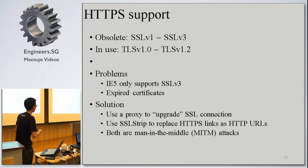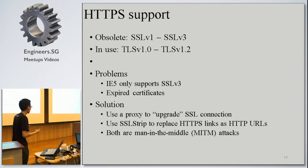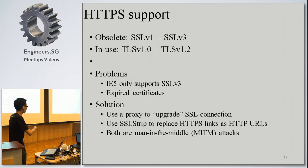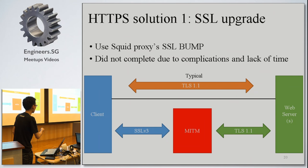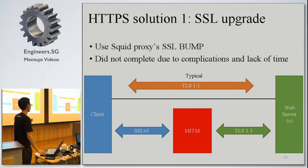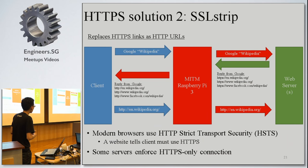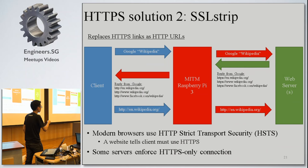There are two solutions. The first is to use a proxy to upgrade the SSL connection. The second is to use SSL Strip to remove HTTPS links and map them as HTTP URLs. Both are man-in-the-middle approaches because they involve breaking the SSL protocol. The first method didn't succeed because I didn't have enough time — the idea is the client connects over SSL 3 to a man-in-the-middle, which then uses TLS 1.1 to communicate with the web server.